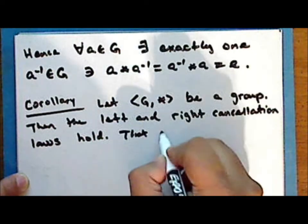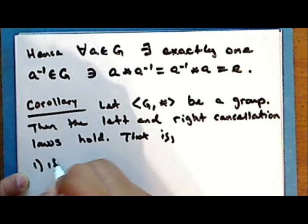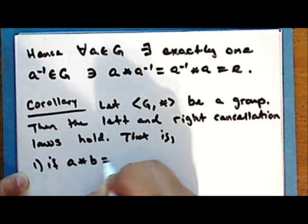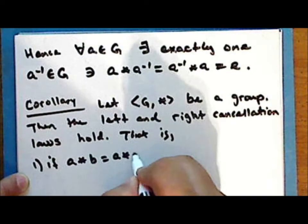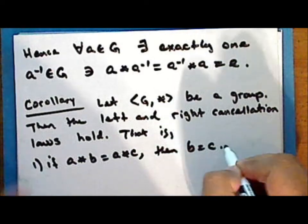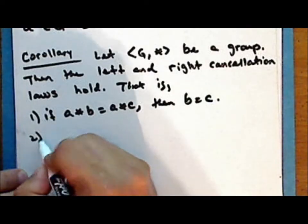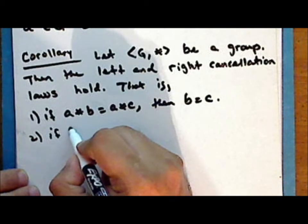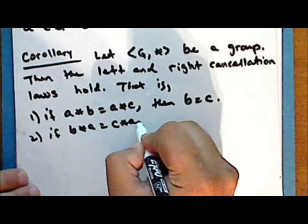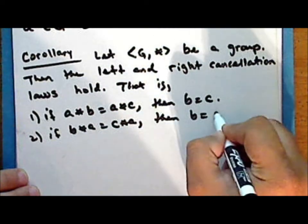That is, if A star B is equal to A star C, then B is equal to C. And if B star A is equal to C star A, then B is equal to C.